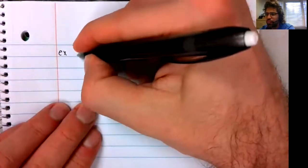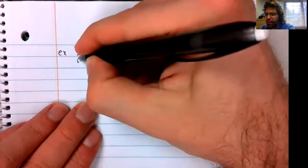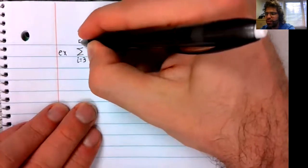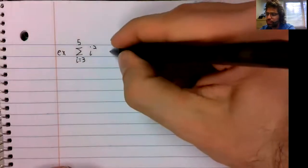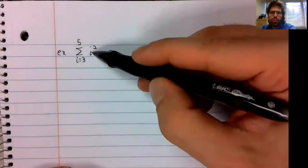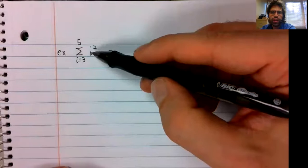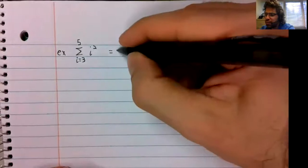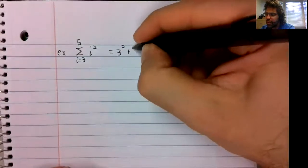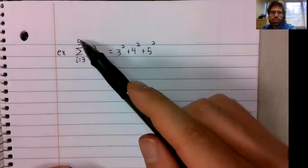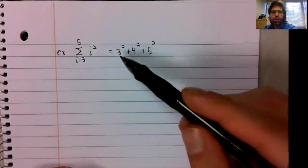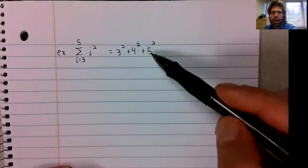Maybe just a brief example or two for the road. The sum from I equals three to five of I squared. So you're substituting numbers in for I and adding the results together. We start with three, and then we count up. And when we get to this number, we stop. So this is three squared plus four squared plus five squared.